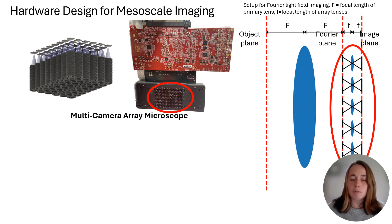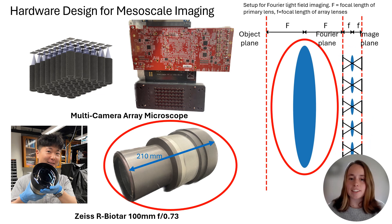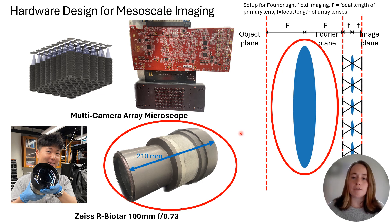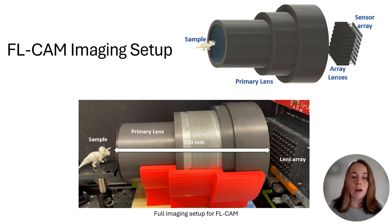The MCAM has 48 12.7 megapixel sensors, which together can deliver 600 megapixels per snapshot. Our chosen primary lens is this very large Zeiss lens, shown here being held by my lab mate Shichi. This was originally designed to image an X-ray scintillator response onto large format film, and we're actually using the lens backwards, placing our sample where the film used to sit. That allows us to project light from a large area into infinity space while maintaining high resolution, which is necessary for mesoscale imaging. Putting all that together, here is the imaging setup for our current hardware design, with the Zeiss lens placed directly in front of the MCAM.